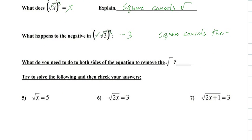When we're dealing with equations, now that we know a square will cancel a square root, we're trying to solve this equation, which means we need to get that x outside the radical. What do we need to do to both sides of the equation to remove the radical?